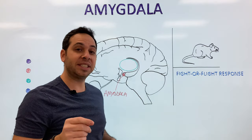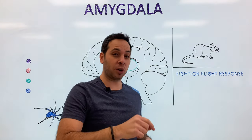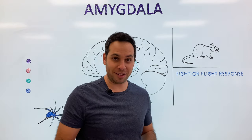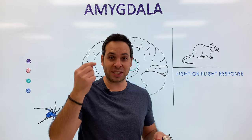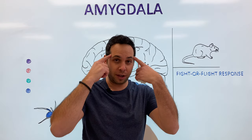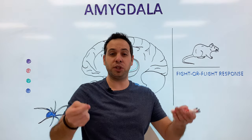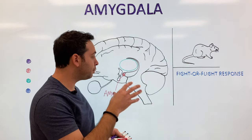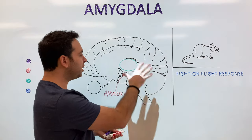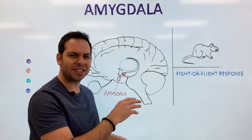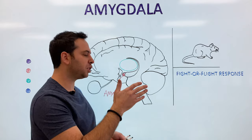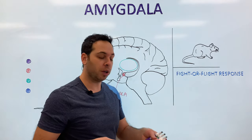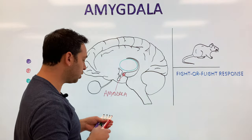Remember, I said lobes, plural, which should tell you that we have two amygdalas — one on each side. We have two hippocampuses, two thalamuses. That's always important to know, because we always see structures that look like just one cross section. But remember, we have two hemispheres, which means we have two of each structure.